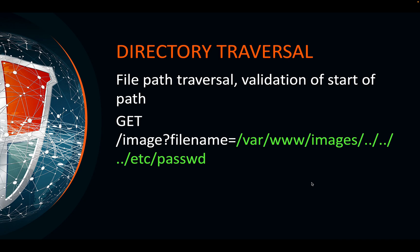Another kind of vulnerability is when the path must start with a specific prefix — for example, the filter checks that the filename starts with /var/www/images. If you put the path traversal sequence at the front it won't work, because the filter requires that prefix. But you can initiate the path traversal sequence after the required prefix and still get back to the root, then into /etc to read the passwd file.